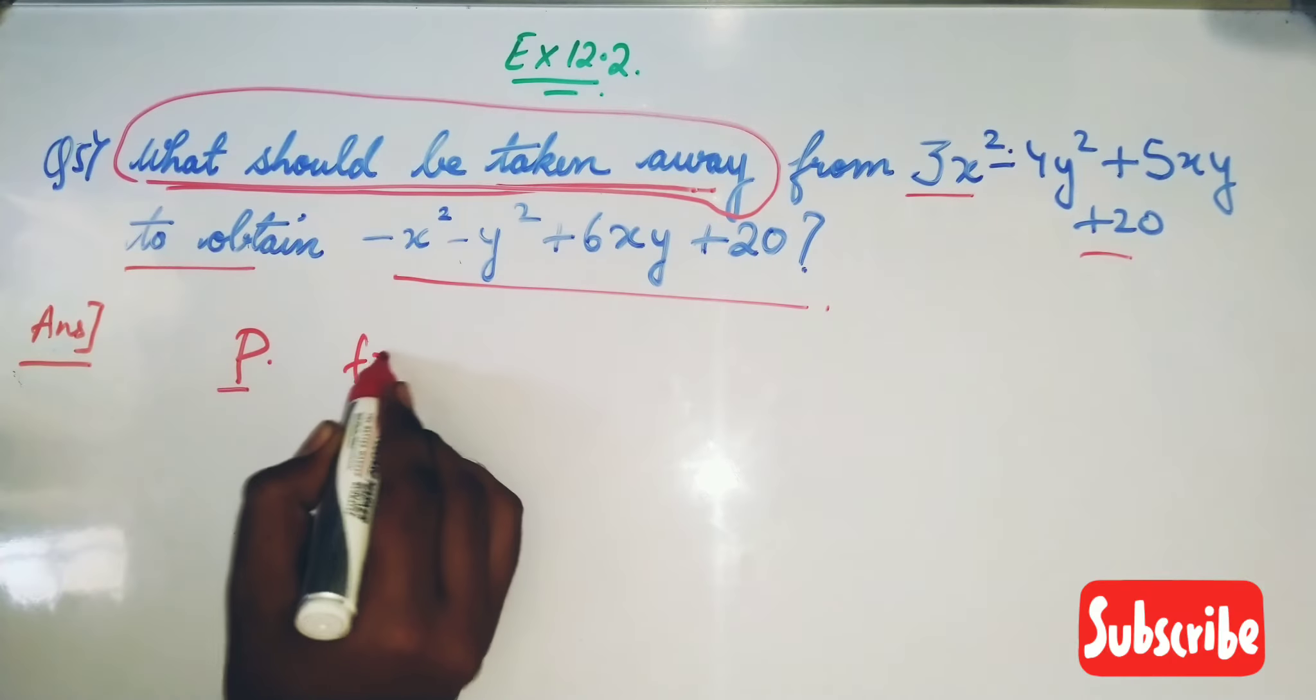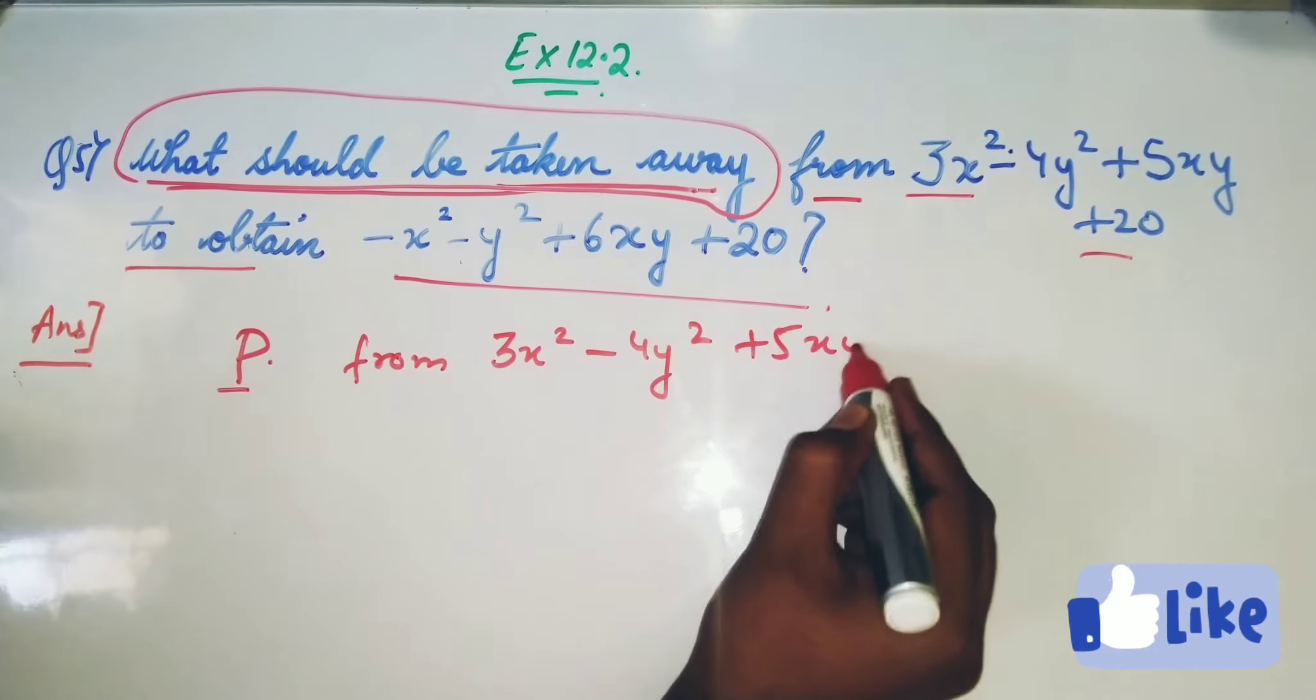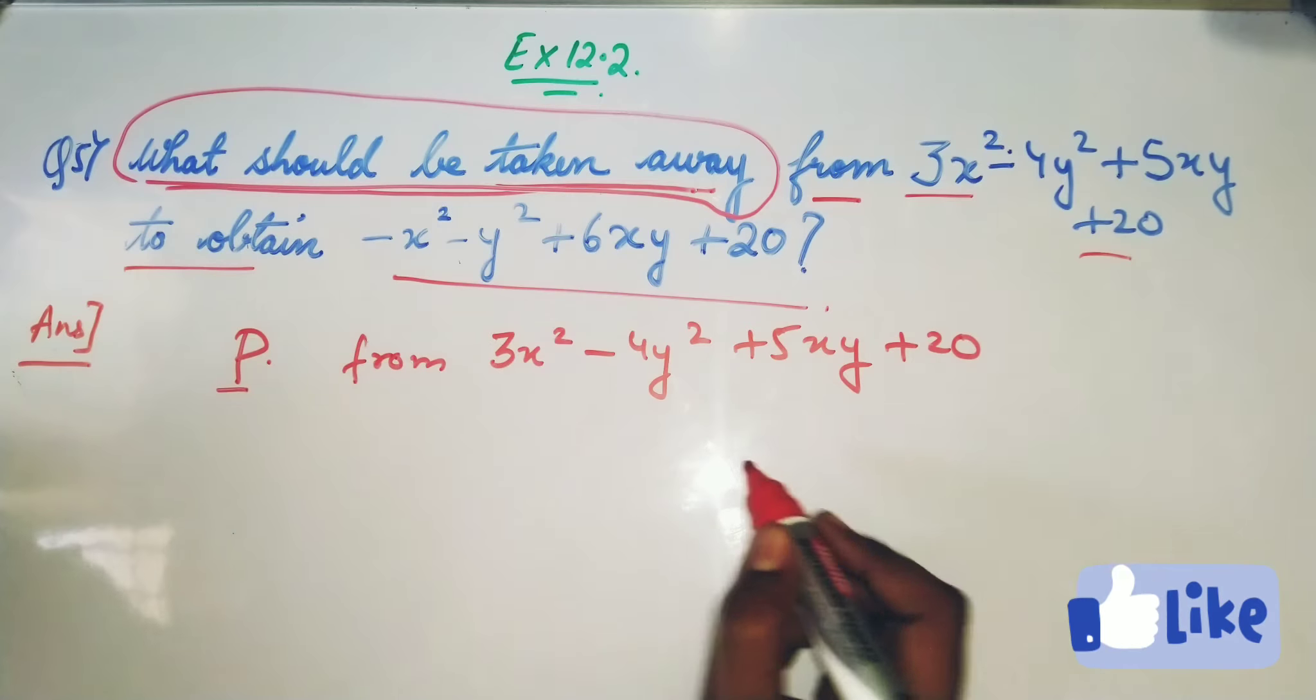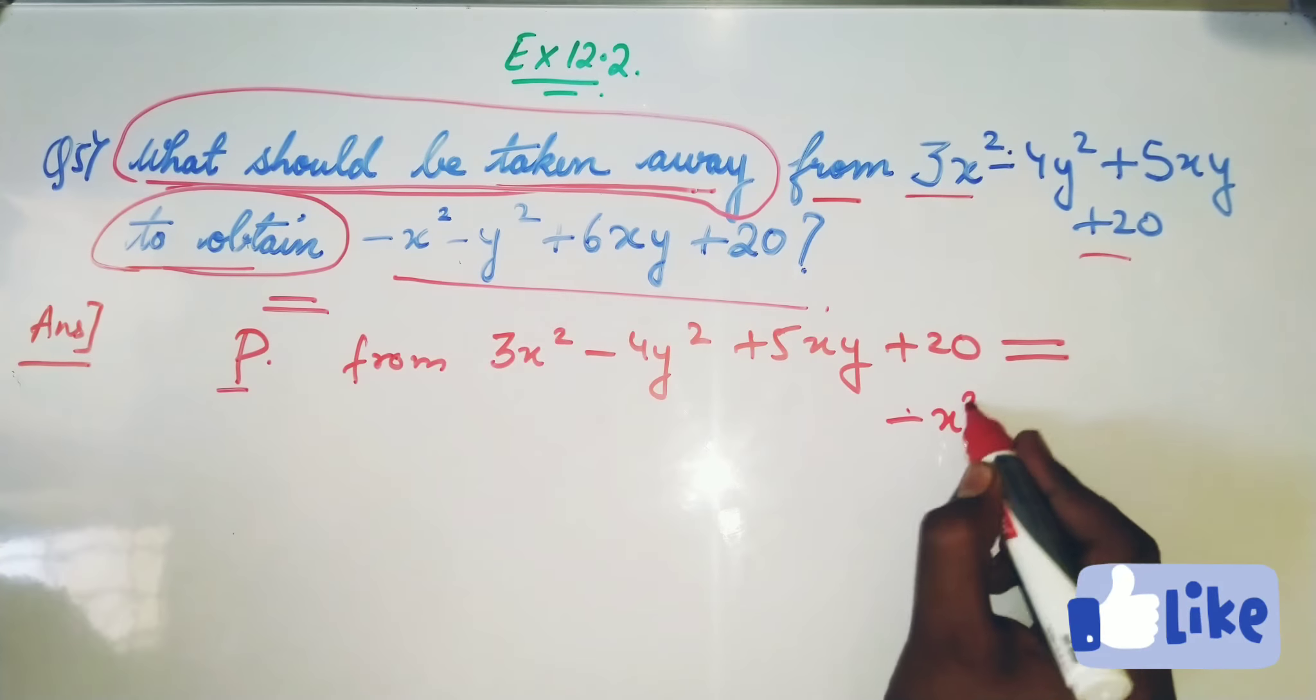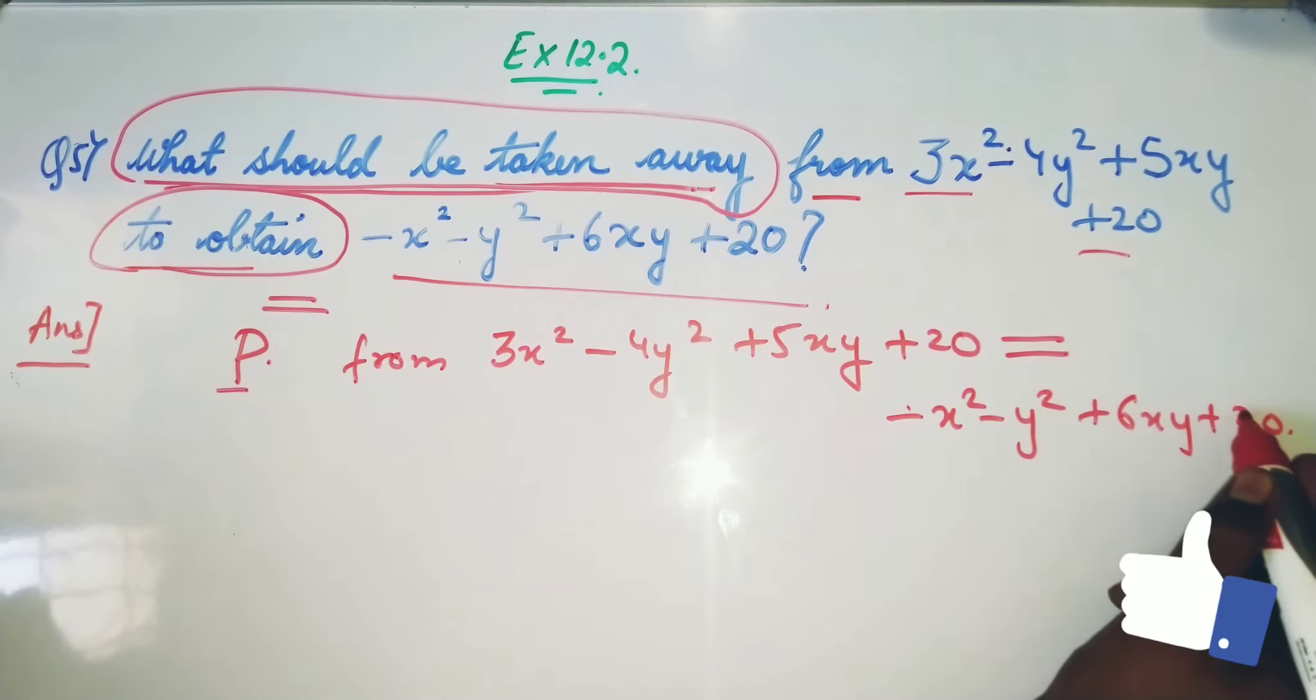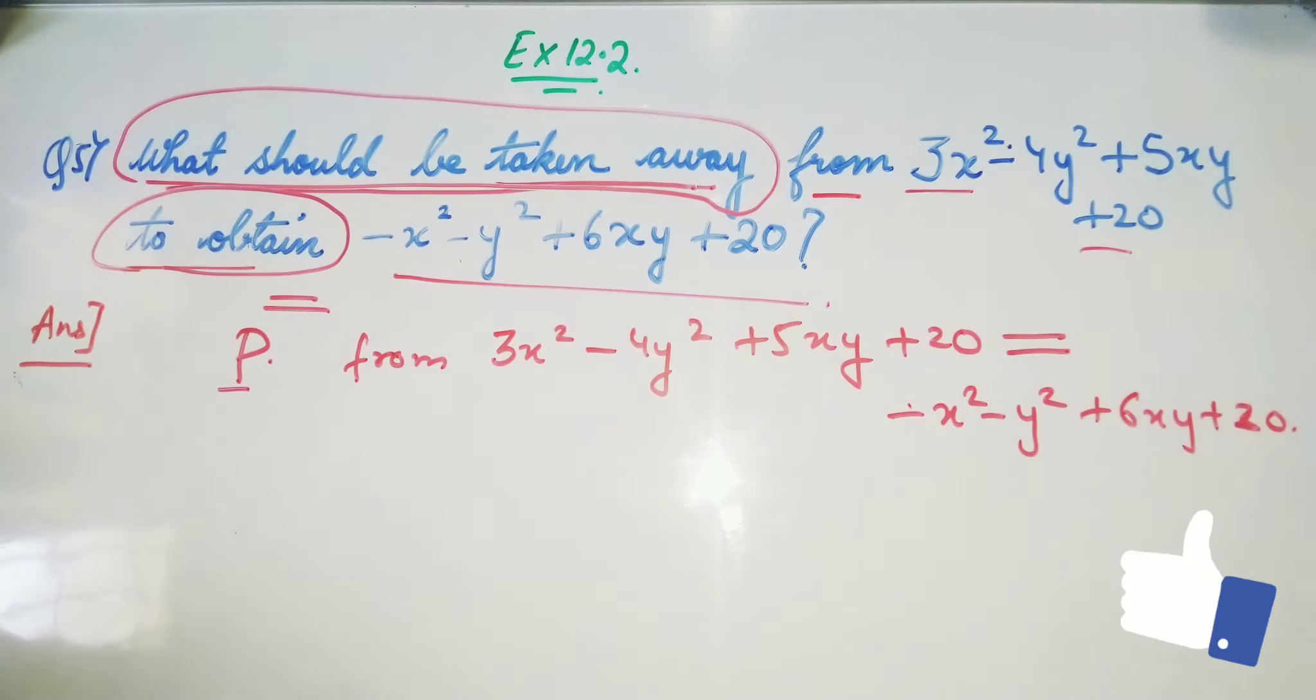P from 3x² - 4y² + 5xy + 20 to obtain, to obtain means always that is equal to sign, so you have to put equal to sign. Equal to what? -x² - y² + 6xy + 20. So this will be the question. I have just rewritten the question in this form.